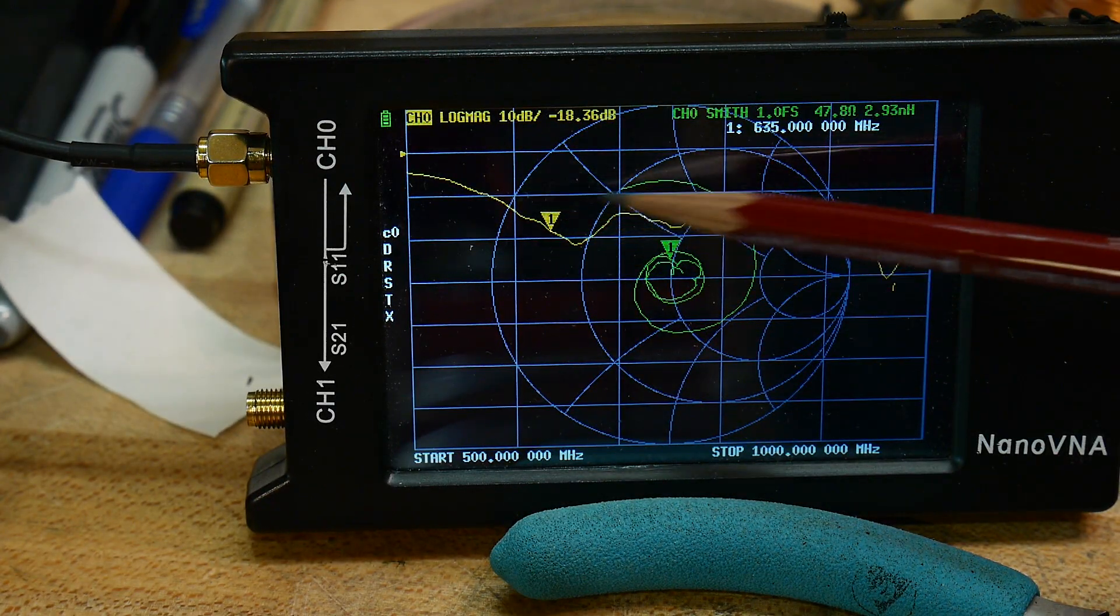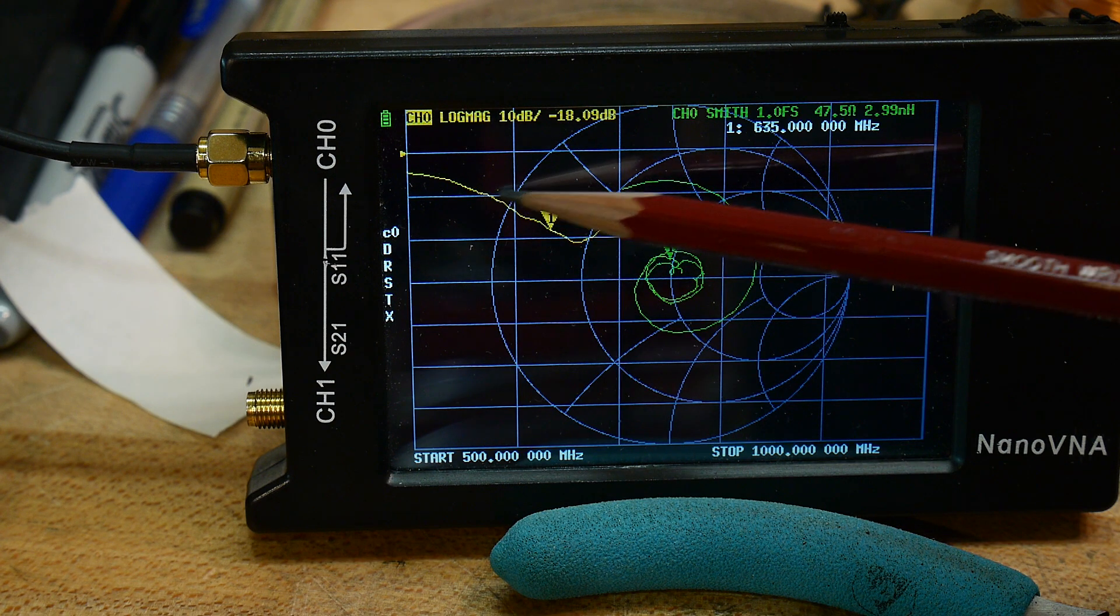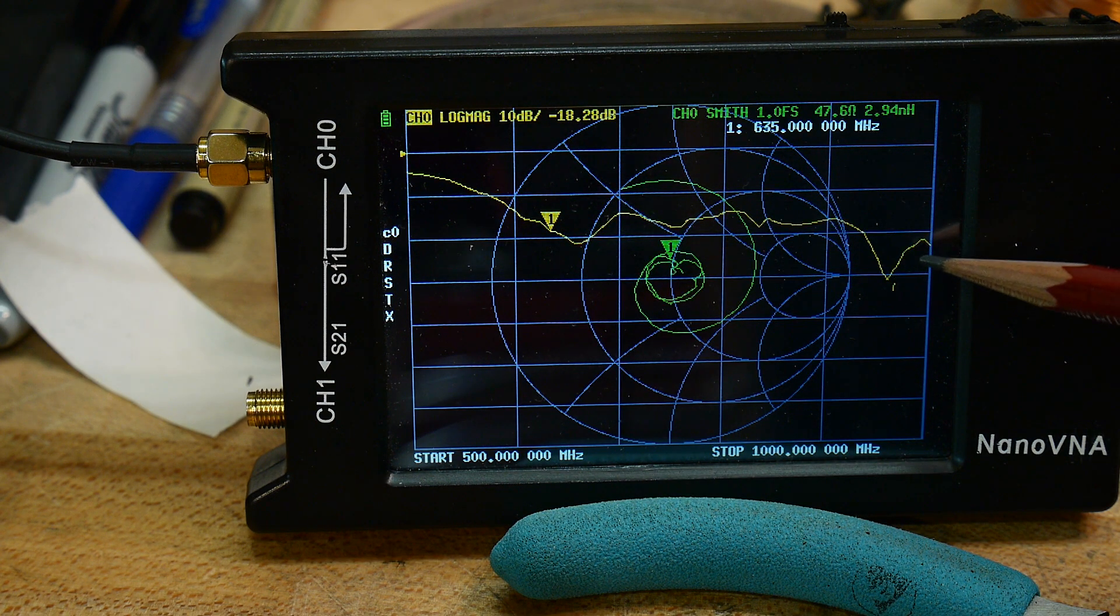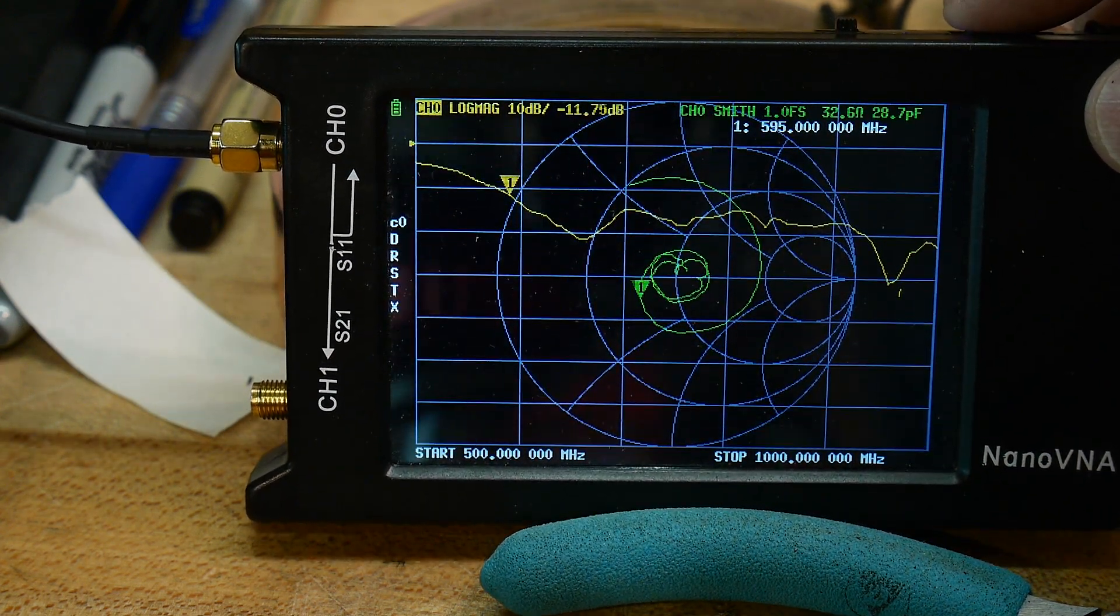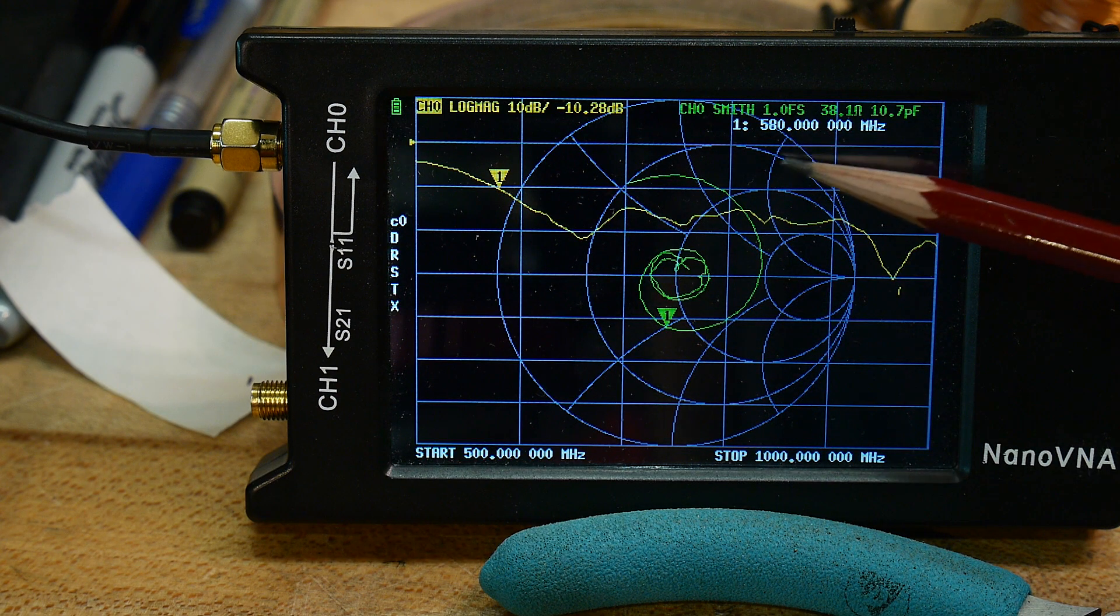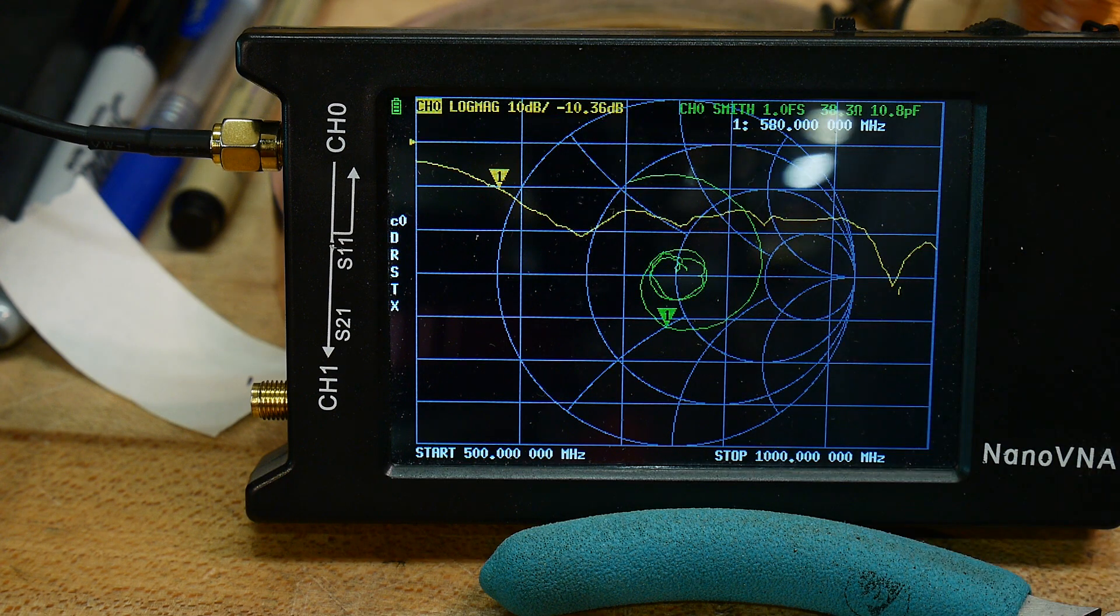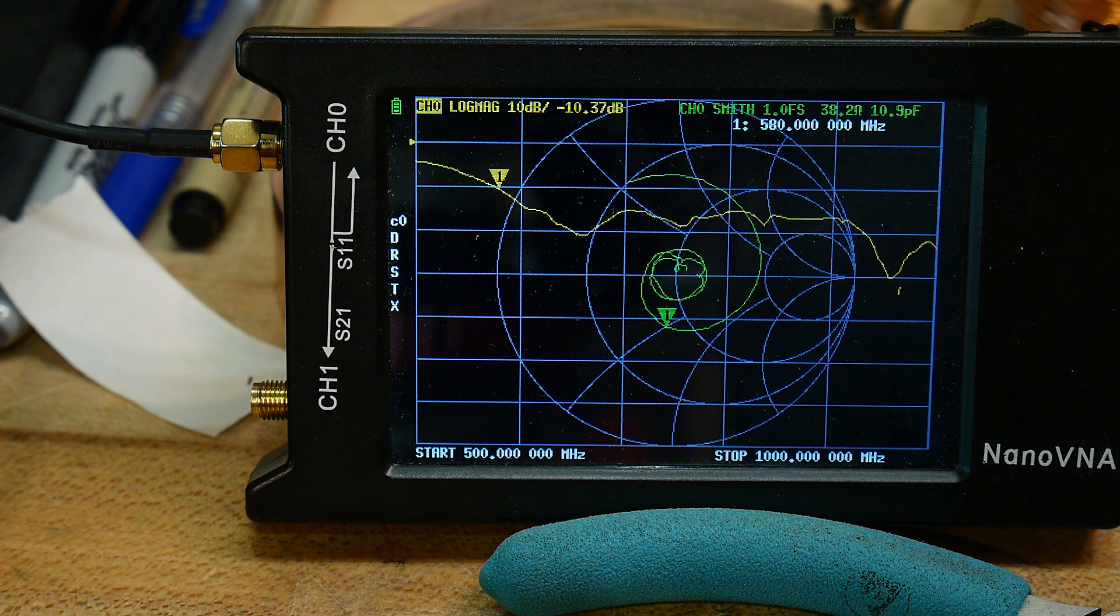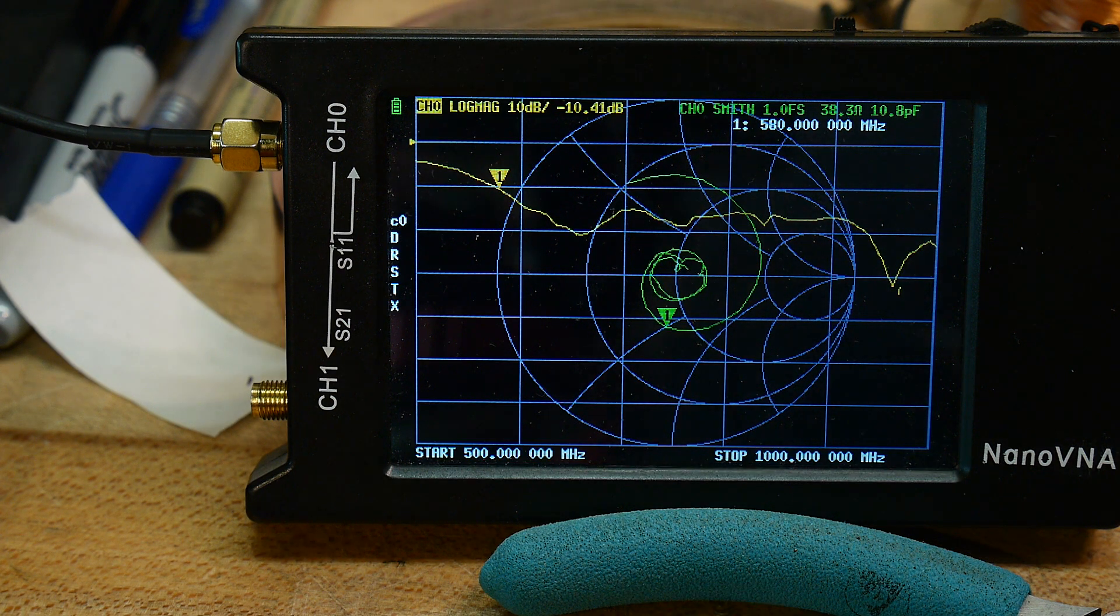And so everything is working really good from this frequency about here all the way to the end. And so where does it start? Well, it crosses the 10 dB point at 500 megahertz. So from 500 megahertz to 1000 megahertz, this antenna works fine. So really, really cool broadband antenna, disc cone.